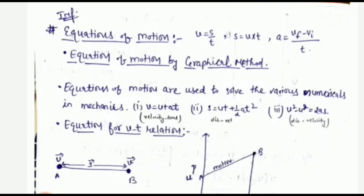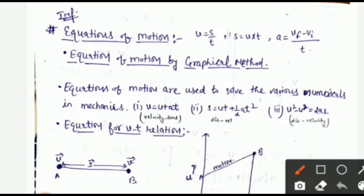Basically, we will discuss how we derive the equations of motion. First of all, we have read three formulas — three formulas you have used for every numerical. First is: velocity is equal to displacement per unit time, so displacement is equal to velocity into time. Next, acceleration is equal to change in velocity per unit time, which is final velocity minus initial velocity divided by time.